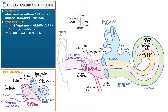Then denote that the cochlear duct is filled with endolymphatic fluid, which is high in potassium and low in sodium, much like intracellular fluid. Denote that Meniere's syndrome — bouts of vertigo, low frequency hearing loss, and ear fullness — is thought to be due to pathologically elevated endolymphatic sodium concentration, so it's commonly treated with salt-wasting diuretic medications.